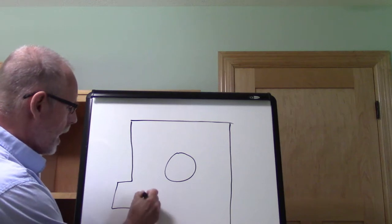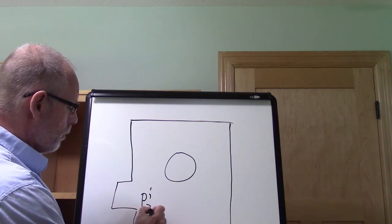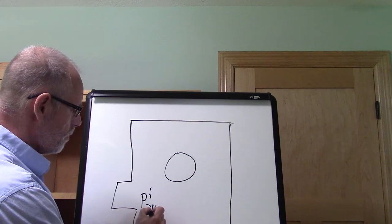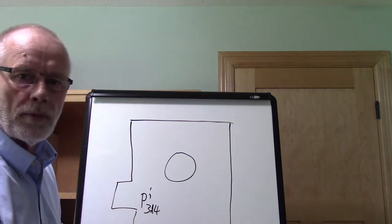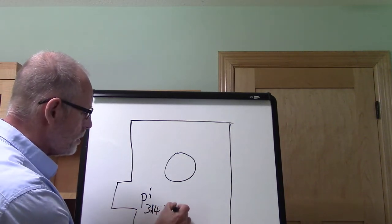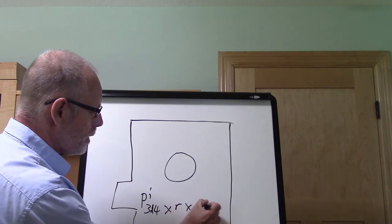We have to take pi, which is 3.14, and multiply that by radius by radius equals the square footage.